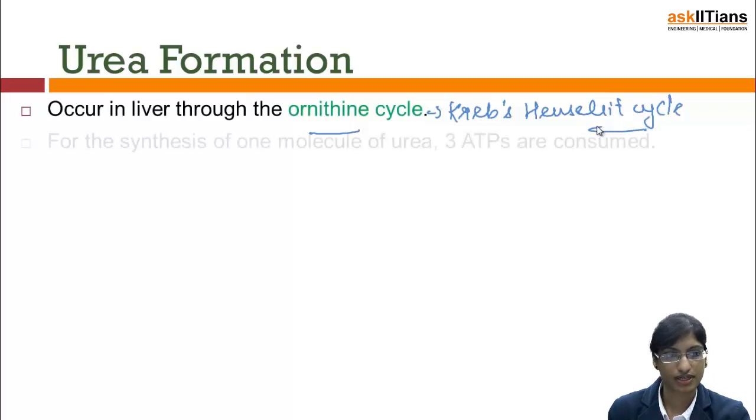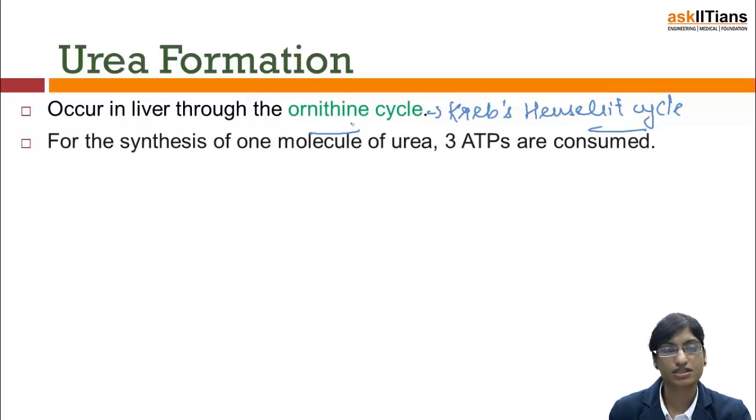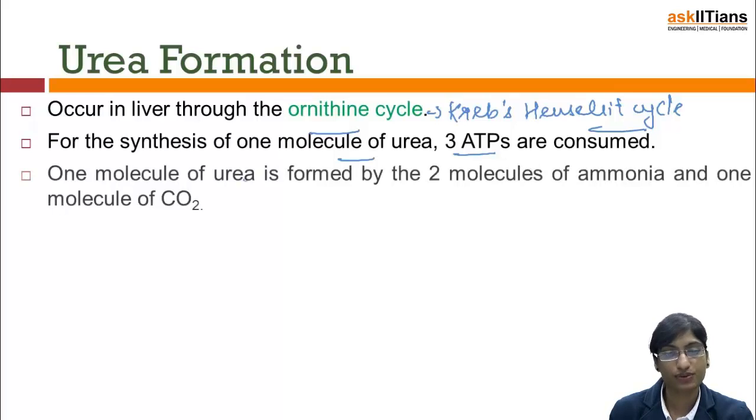So next thing about this, for the synthesis of one molecule of urea, 3 ATPs are consumed. And one molecule of urea is formed by two molecules of ammonia and one molecule of CO2.